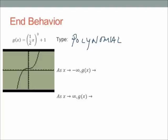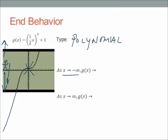Let's try end behavior for as x approaches negative infinity. That means I'm standing way over on the left-hand side of the x-axis, and I'm going to figure out which way I have to look. I can't see anything going on in the middle of the graph — I'm so far out to the left. Since the graph keeps progressing down, if I'm standing there I would have to look down to see the graph way down there. So as x approaches negative infinity, the y values are getting smaller — g of x approaches negative infinity.